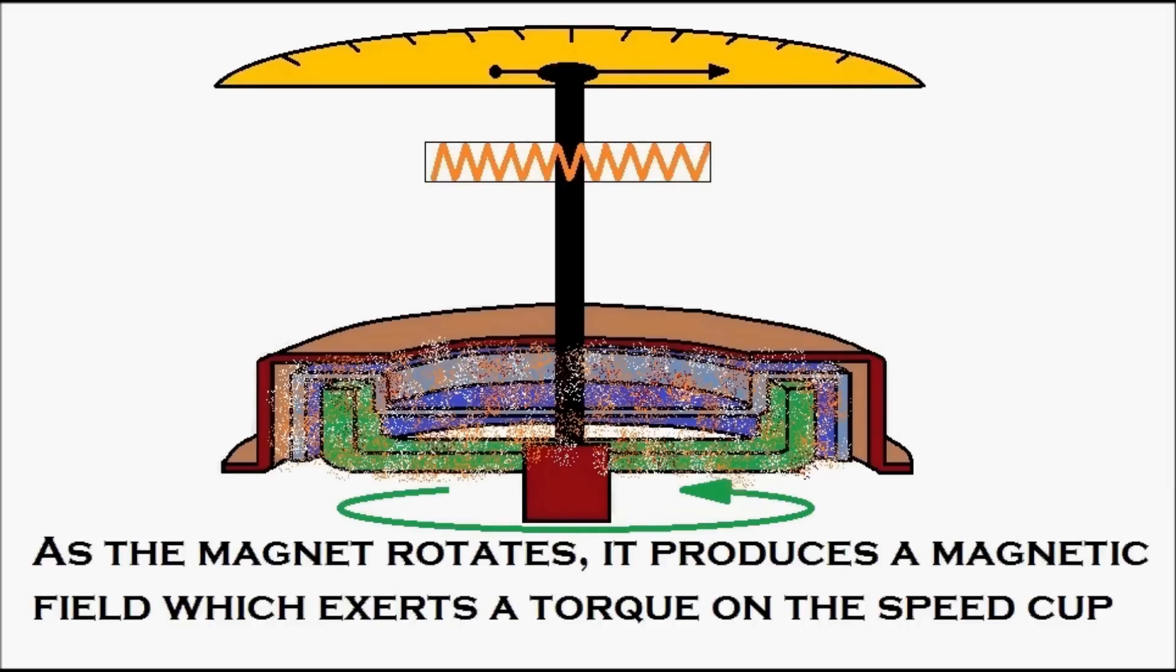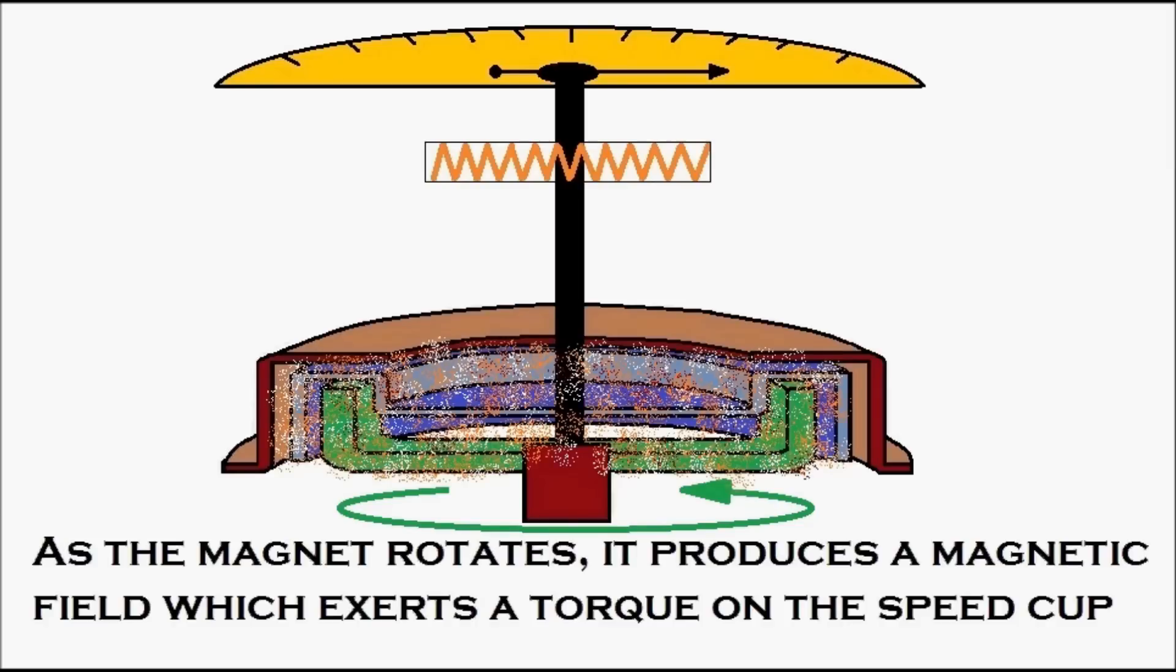And due to this magnetic field, you can see there is a torque generated on the speed cup, and the speed cup starts to rotate.